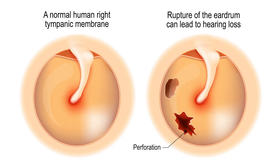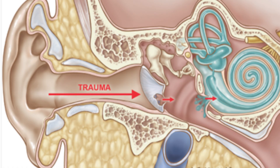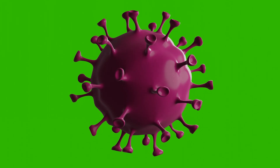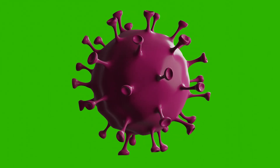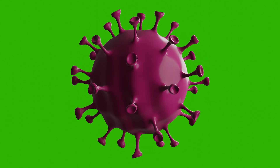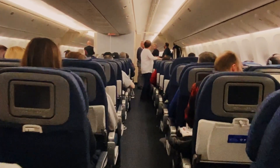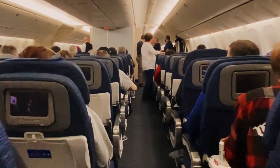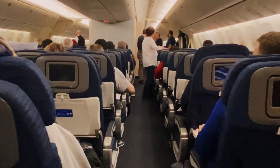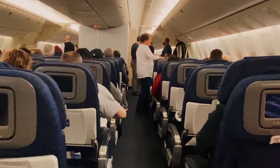One of the common disorders is tympanic membrane perforation, which can be caused by trauma — like when a sharp object is inserted in the ear, a loud explosion, or a slap to the ear. Sometimes infections and dysfunction of the eustachian tube can cause perforation as well. Barotrauma, or changes in pressure like during flying or scuba diving, is another cause of perforation.